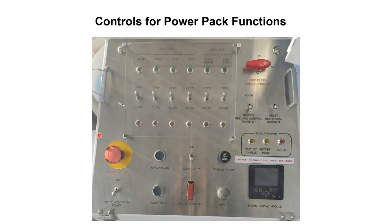Now finally we will see the controls for the power pack functions. The first button is engine stop, then engine throttle — if we want to increase or decrease the throttle of the engine, we can adjust from this throttle control. Then we have horn, emergency kill, and instrumentation power — if we want to turn the instrumentation power on and off, we can use this button. And if we want to turn the lights on and off, we can use the other small buttons installed inside the control cabin.